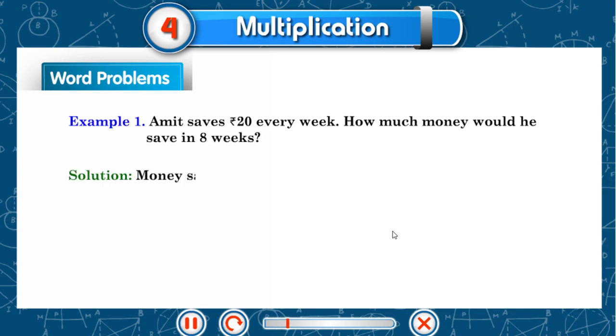Solution: Money saved in 1 week equal to 20 rupees. So money saved in 8 weeks equal to 20 rupees into 8 equal to 160 rupees.